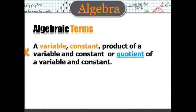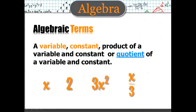Algebraic terms. A variable, constant, product of a variable and constant, or quotient of a variable and constant. And there's some examples.